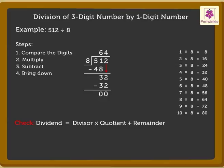512 is equal to 8 into 64 plus 0. That is 512 plus 0. So, here we get 512 is equal to 512. Hence, our division is correct.